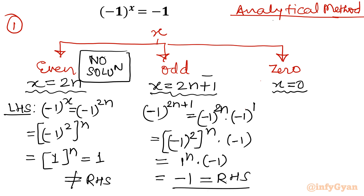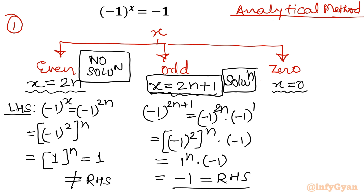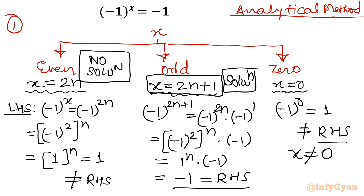So the analytical conclusion is: for x equal to odd, there is a solution. For x equal to zero: LHS is minus one power 0. Anything power 0 is 1, as long as the base is real, and minus one is real, so that value is 1, which is not equal to our RHS. So no solution for x equal to 0; x cannot be 0.